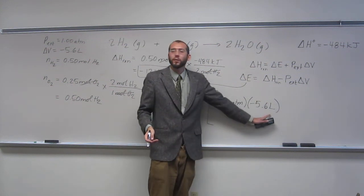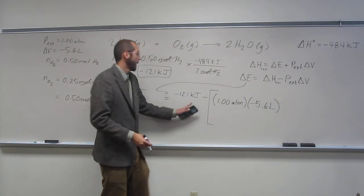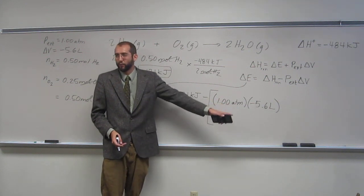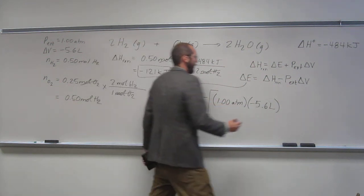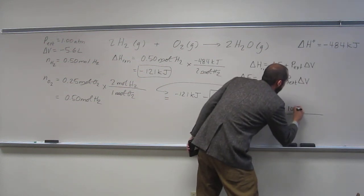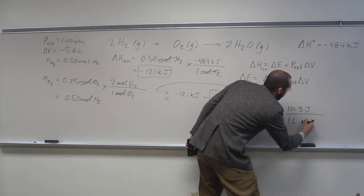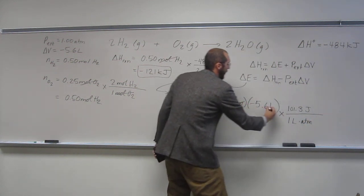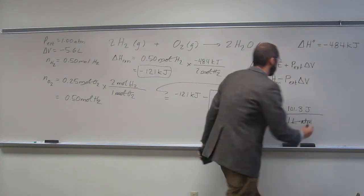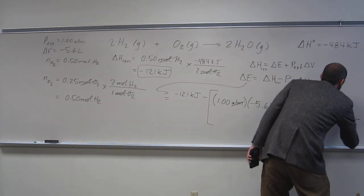So is ATM liters units of energy? It is, but can we add it to kilojoules or subtract it to kilojoules? So what do we got to do to it? Convert it to kilojoules. So in order to do that, you guys remember the conversion factor? Yeah, so 101.3 joules is 1 liter ATM. So that'll cancel that. But this is still in joules and we want it in kilojoules. So 1,000 joules is 1 kilojoule.